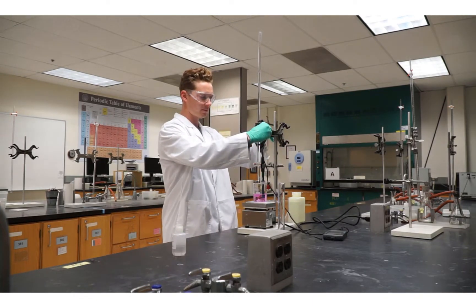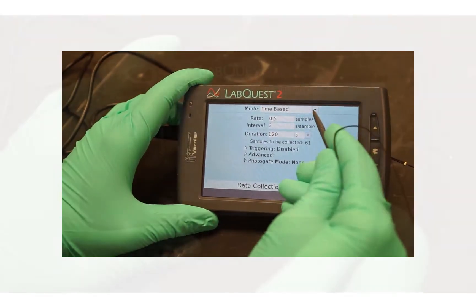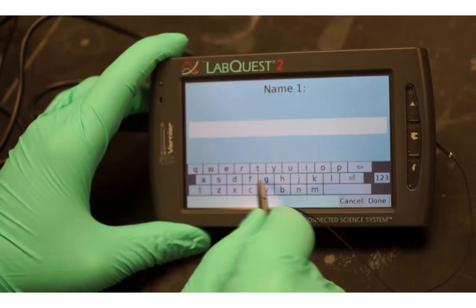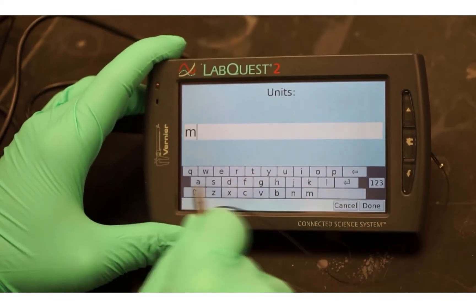Remember, we do not want the glass bulb to break. On the LabQuest, tap Mode. Change the Mode to Events with Entry. Change the Name to Volume. Change the Units to Milliliters, and tap OK.